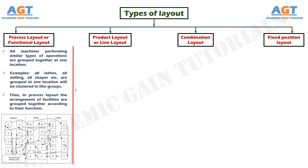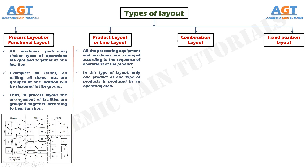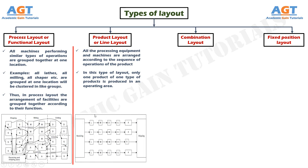Product layout or line layout. If all the processing equipment and machines are arranged according to the sequence of operations of the product, the layout is called a product type of layout. In this type of layout, only one product or one type of product is produced in an operating area. In this figure, we can see a product layout or line layout where machines are arranged in a line according to the sequence of operations of the product.